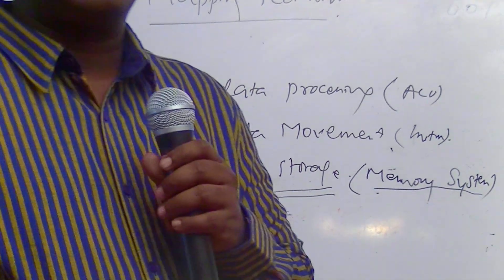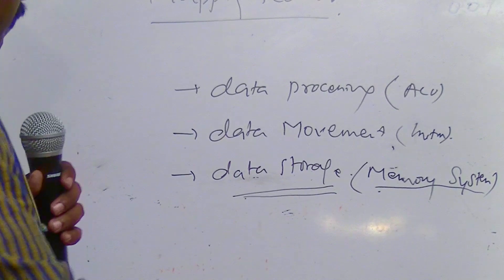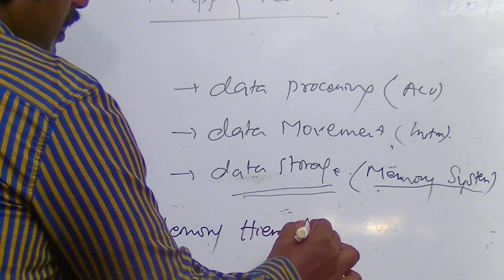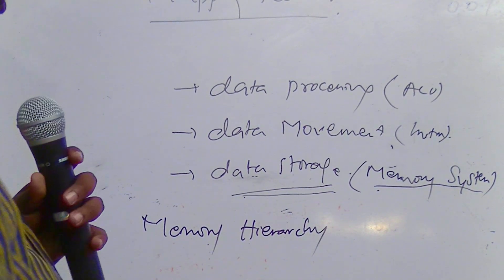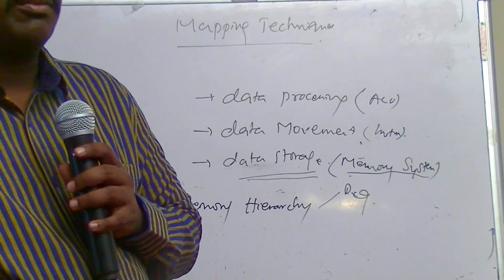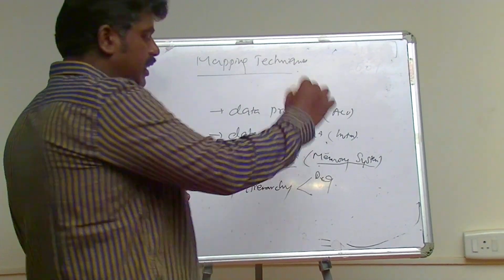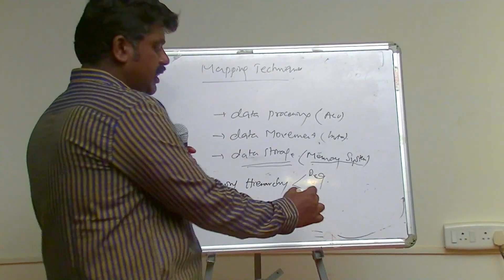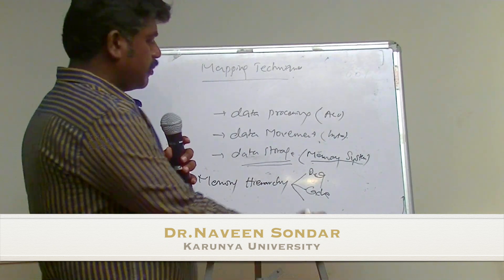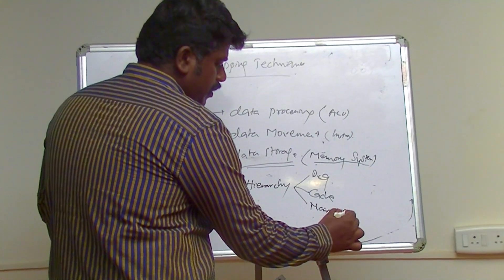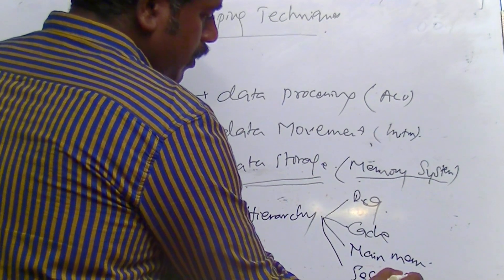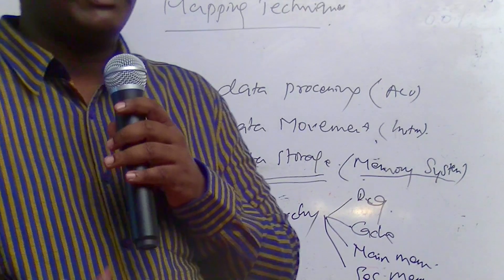We will see the memory hierarchy. First, the processor will check whether the data is present in the register or not. If it is not present in the register, it will check whether it is present in the cache. If not in the cache, it will check main memory, and if not there, it will check secondary memory — the hard disk.